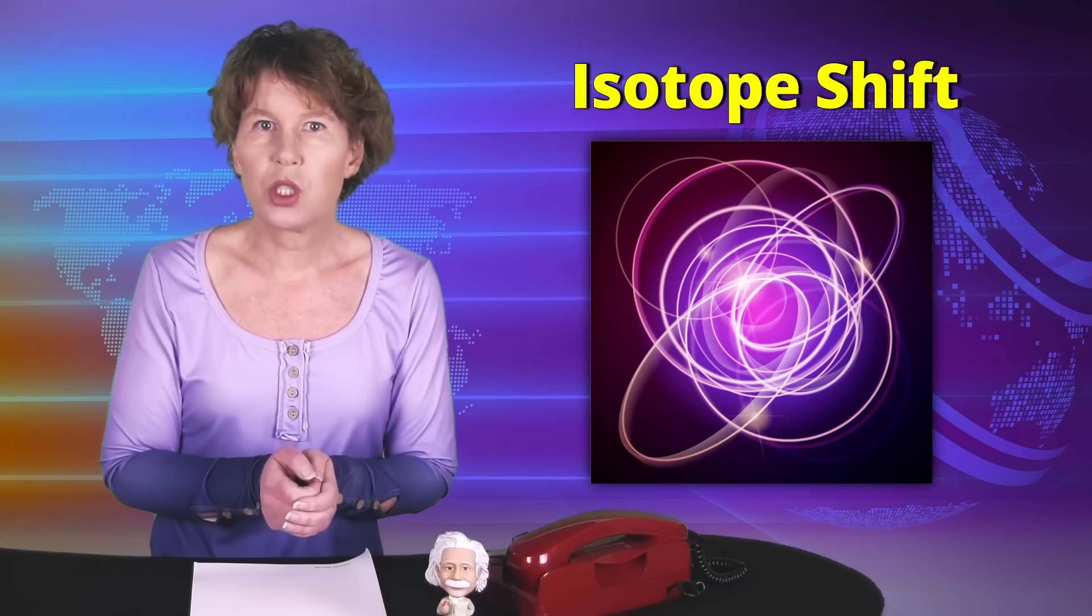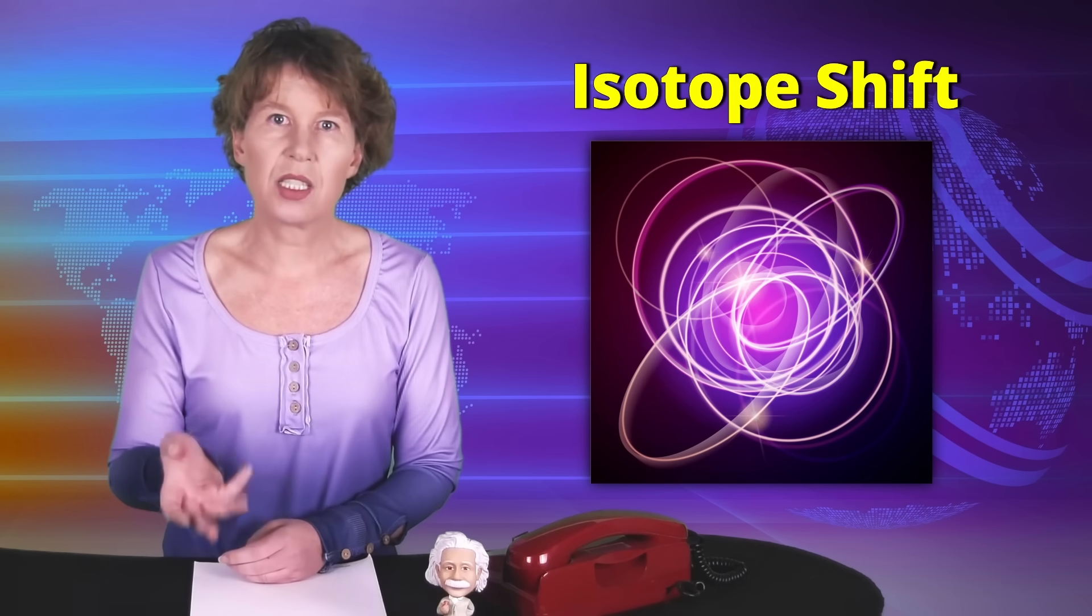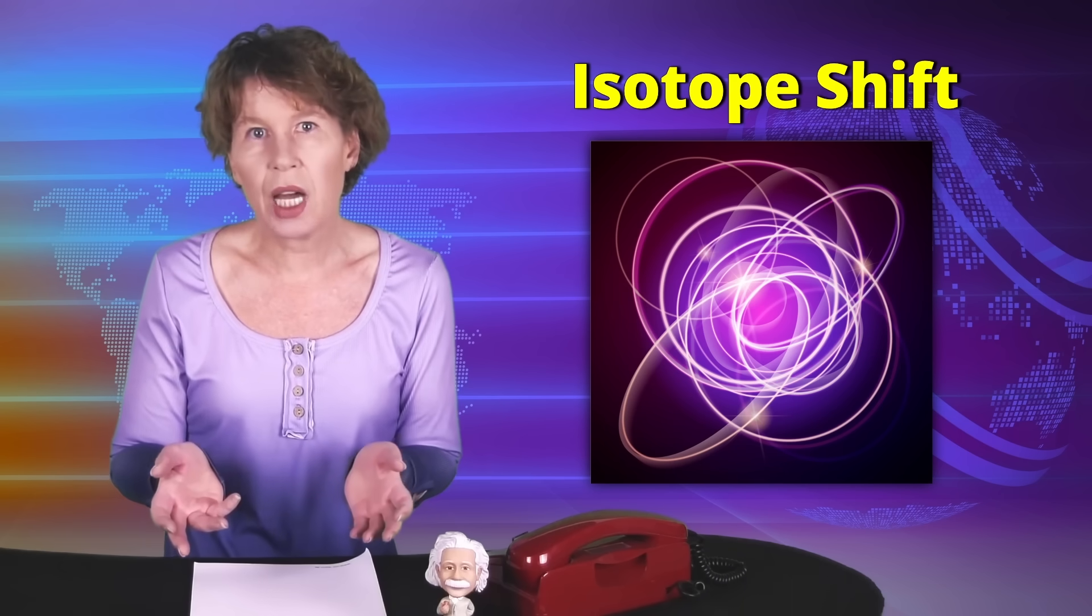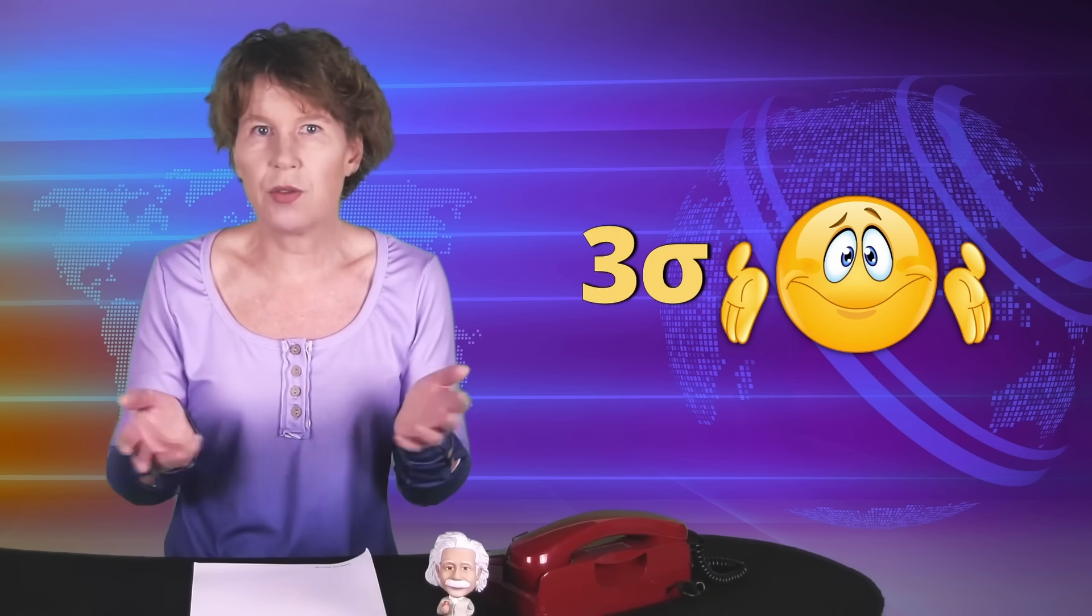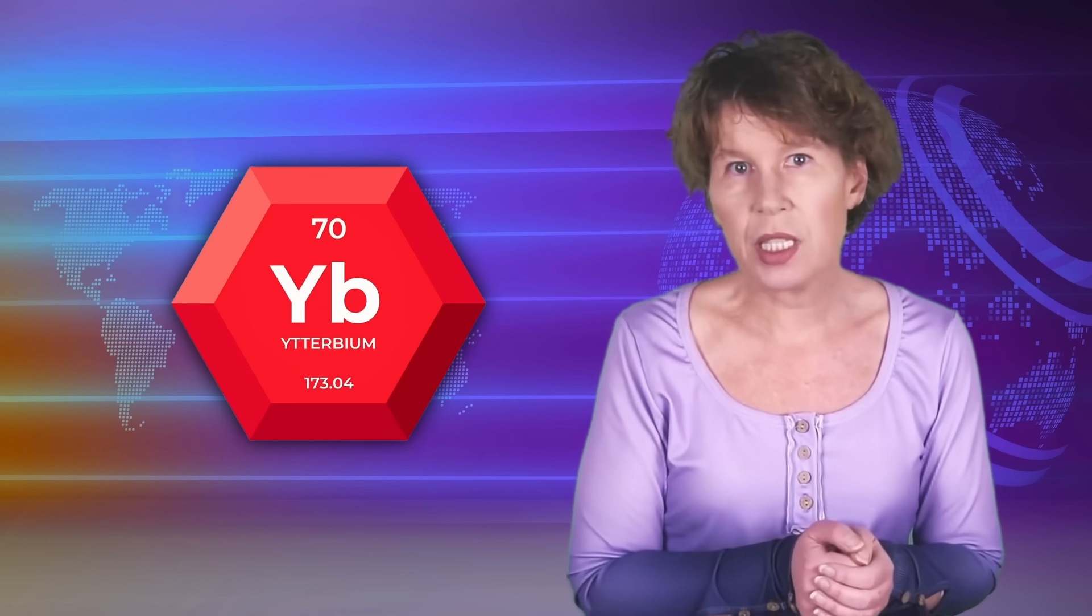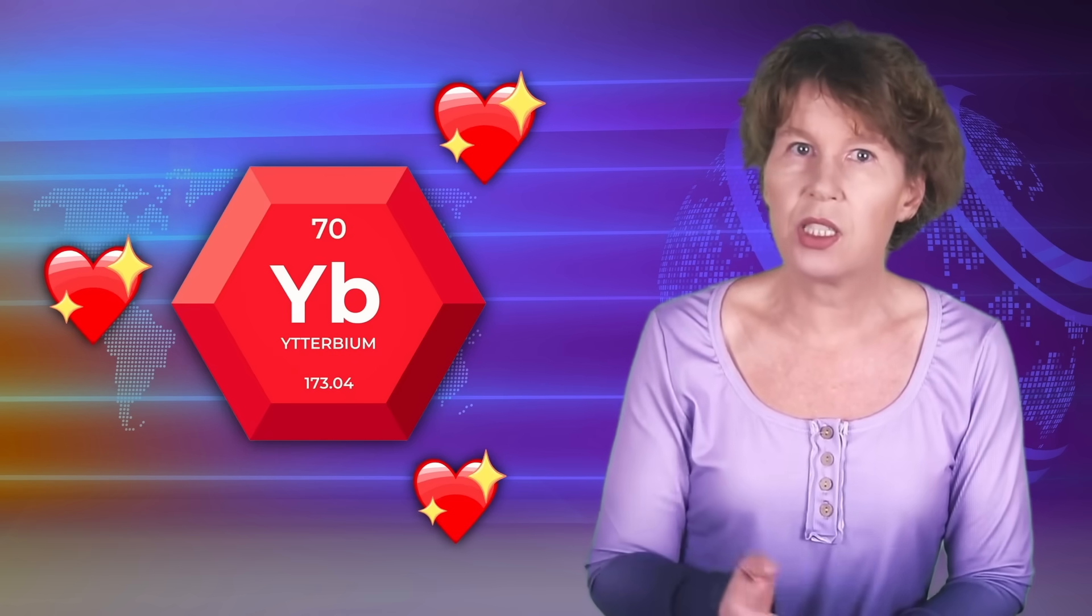This isotope shift should have a predictable dependence on the frequency, but here's the rub, the data don't comply. The three sigma deviation which the MIT guys found in 2020 isn't much. It could happen with a chance of one in a few hundred, just coincidentally. It's not the thing that keeps you up at night, unless Ytterbium is your best friend, so of course nuclear physicists looked into this closer.